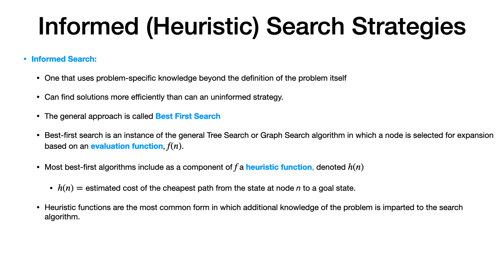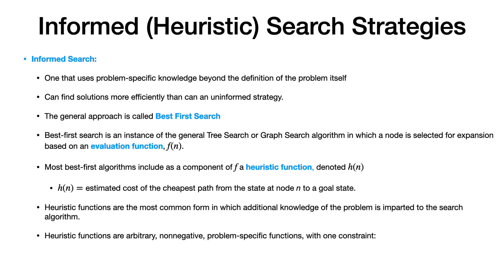Heuristic functions are the most common form in which additional knowledge of the problem is provided to the search algorithm. These heuristic functions are mostly problem-specific. They are arbitrary, non-negative, problem-specific functions with only one constraint: if n is a goal node, then h(n) should be zero. So the values can be anything but must be positive and problem-dependent, and the goal node heuristic function value must be zero.